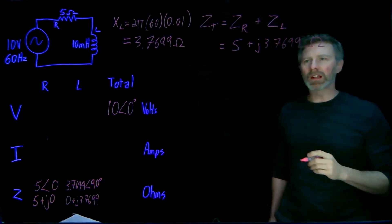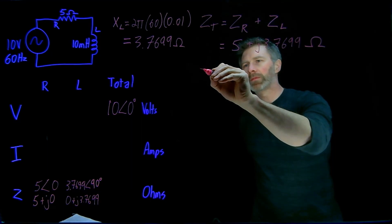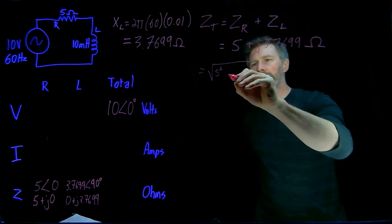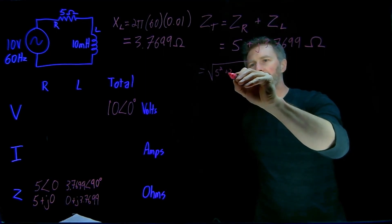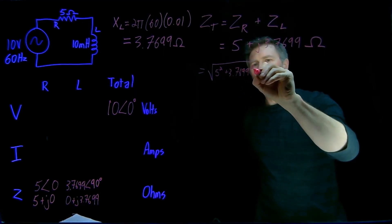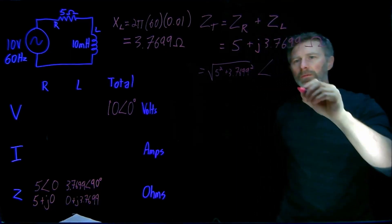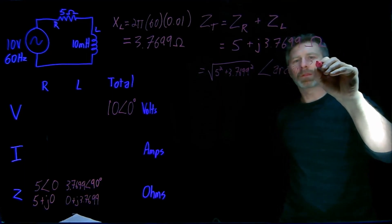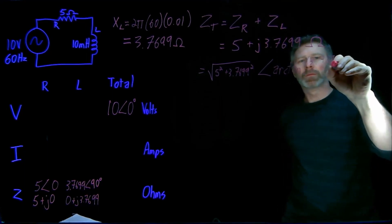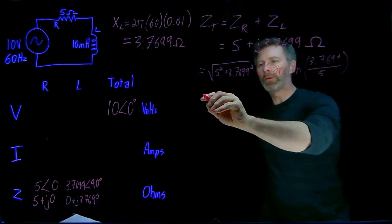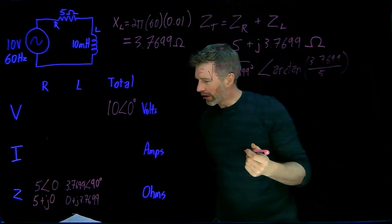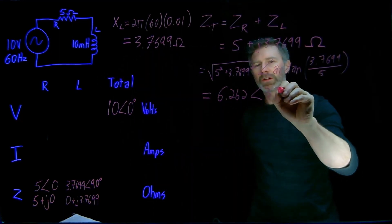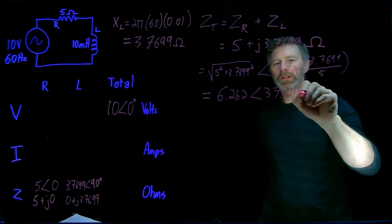Now we can convert this into polar notation. The rectangular to polar conversion: the magnitude will be the square root of 5 squared plus 3.7699 squared, and the phase angle will be arctan of the imaginary part divided by the real part. That works out to 6.262 with a phase angle of 37.016 degrees.